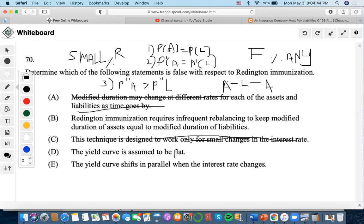The yield curve is assumed to be flat, and the yield curve shifts in parallel when the interest rate changes. Well, obviously, whenever we think about the yield curve, it was always flat, and obviously, the yield curve will shift if the interest rate changes. So D and E are out.